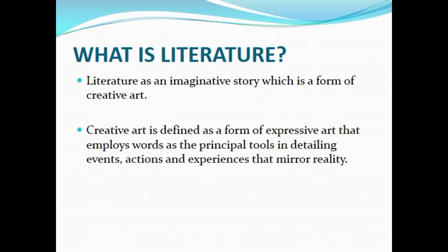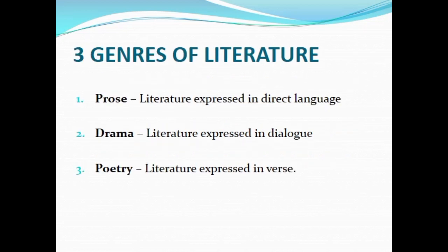Literature mirrors the ills in the society. The essence of mirroring the society is to correct the ills. That is what literature is all about. Then we have three genres of literature: we have prose, we have drama, and we have poetry. Remember, these are the three genres of literature.